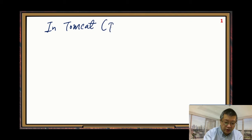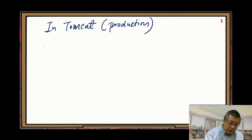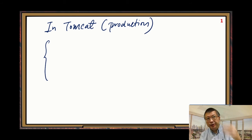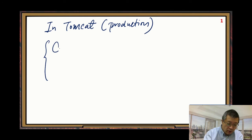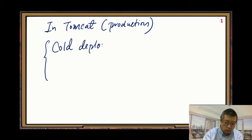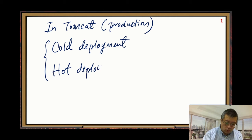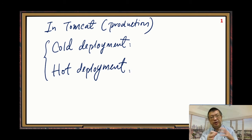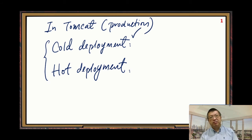This is the production version. There are two different ways we can do deployment. One way: cold deployment. Second way: hot deployment. These two ways — cold way is better for the production case.